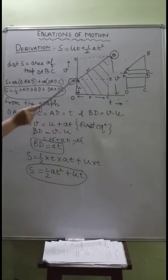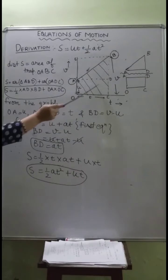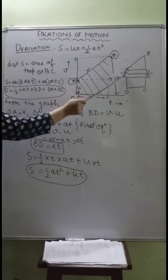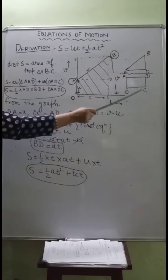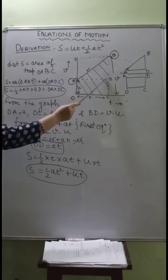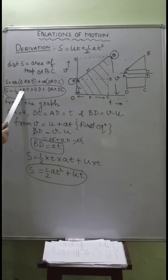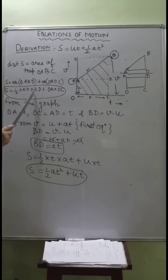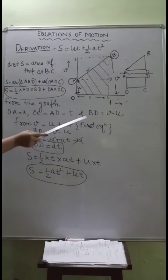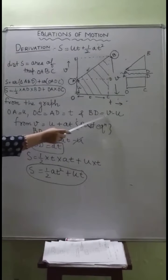This trapezium can be divided into a triangle ADB and a rectangle ADCO. The area of the right-angle triangle is ½ × base × height, and the area of the rectangle is length × breadth. Applying this formula: area = ½ × AD × BD + OA × OC. From the graph, OA = u, OC = AD = t, and BD — previously calculated — equals v - u.